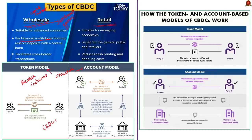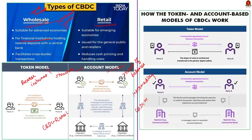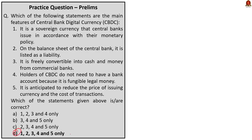This token-based form is viewed as the preferred mode of CBDC as it is very similar to physical cash. The receiver will have to verify if the sender's ownership of token is genuine. In account-based CBDC, it requires maintenance of records of balances and transactions of all holders, indicating ownership of monetary balances — an intermediary will verify the identity of the account holder. This system is more suitable for CBDC-W, that is wholesale. The answer for this question is option D: 1, 2, 3, 4 and 5 only — all statements are the main features of CBDC.